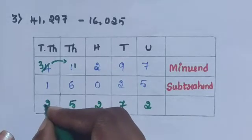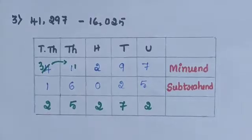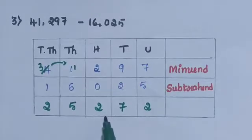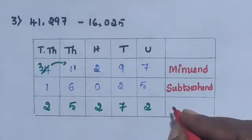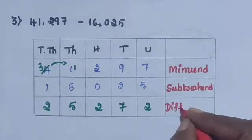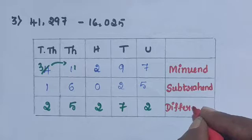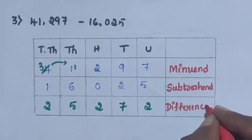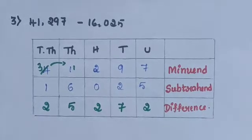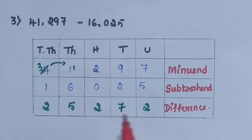After borrowing, 3 minus 1 is 2. The difference is 25,272 and that is the answer.